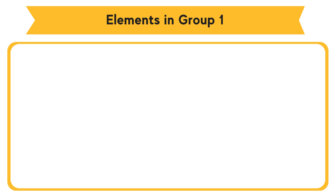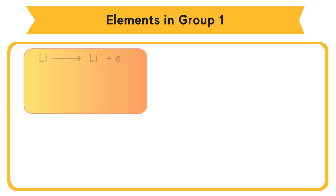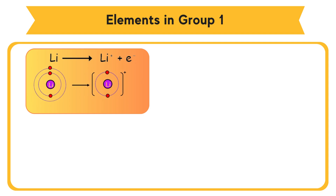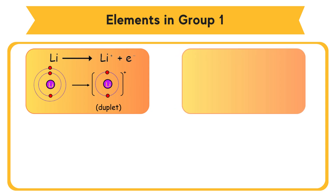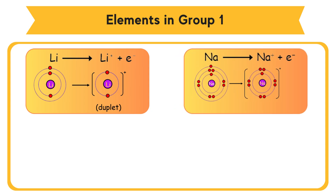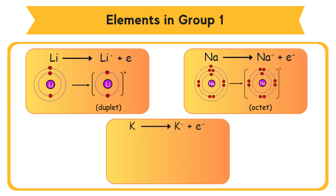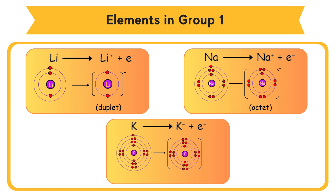Example: Lithium becomes a lithium cation plus 1 electron — duplet electron arrangement. Sodium becomes a sodium cation plus 1 electron — octet electron arrangement. Potassium becomes a potassium cation plus 1 electron — octet electron arrangement.